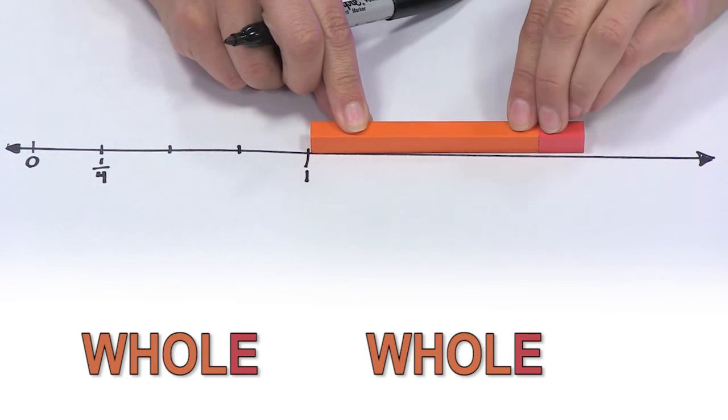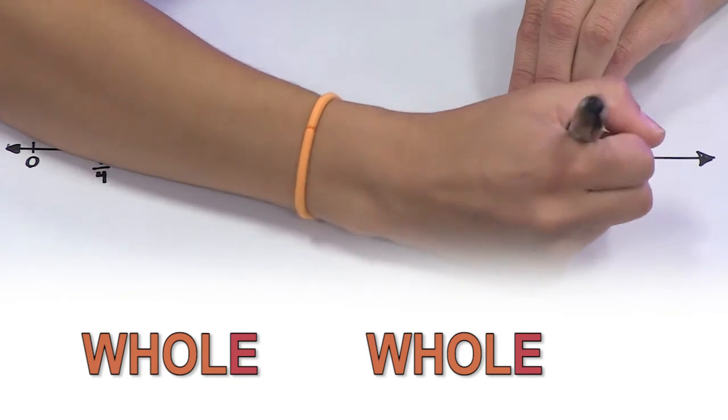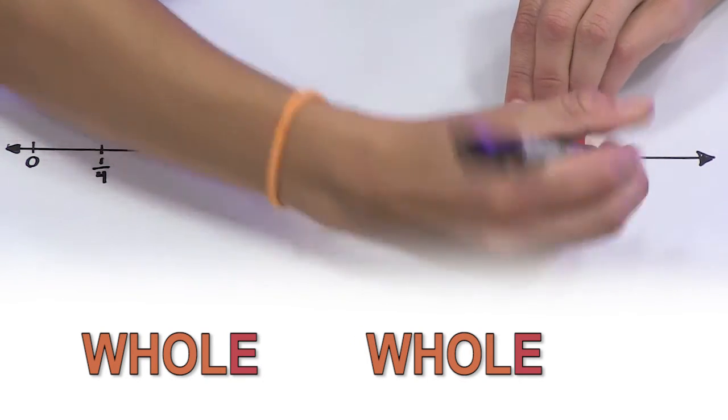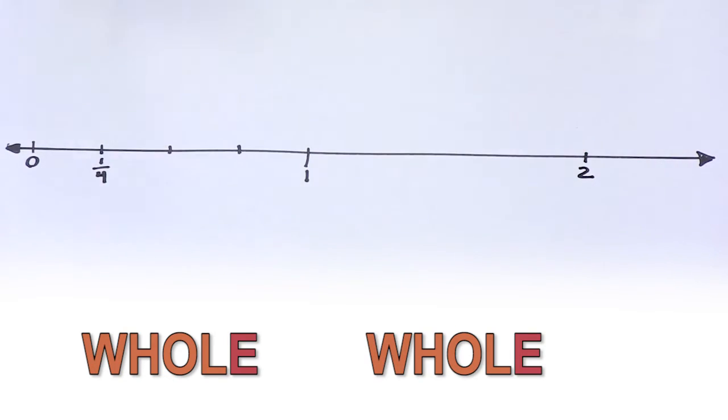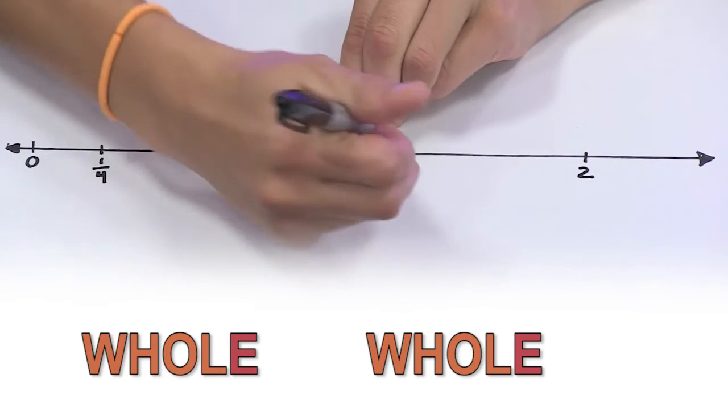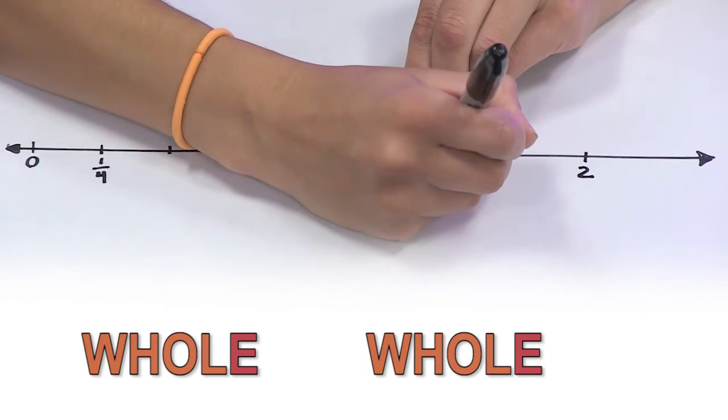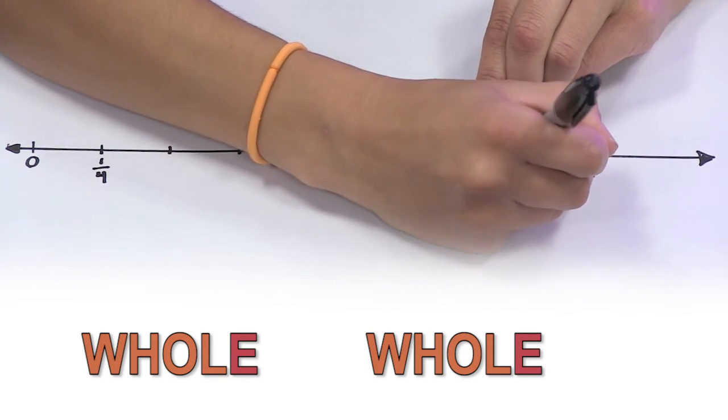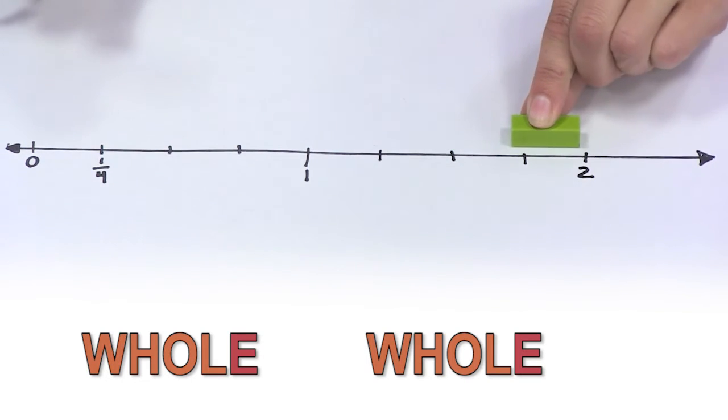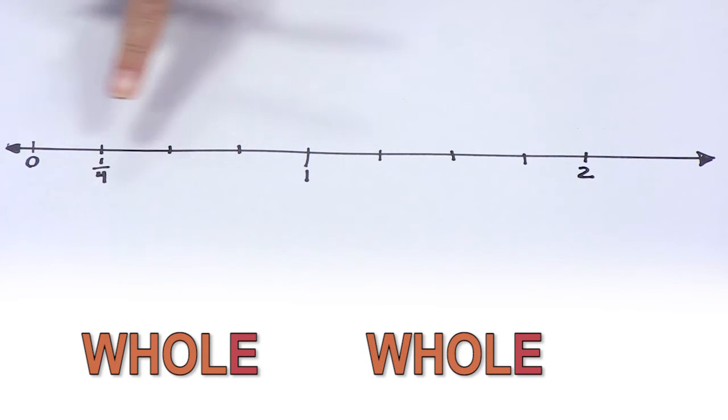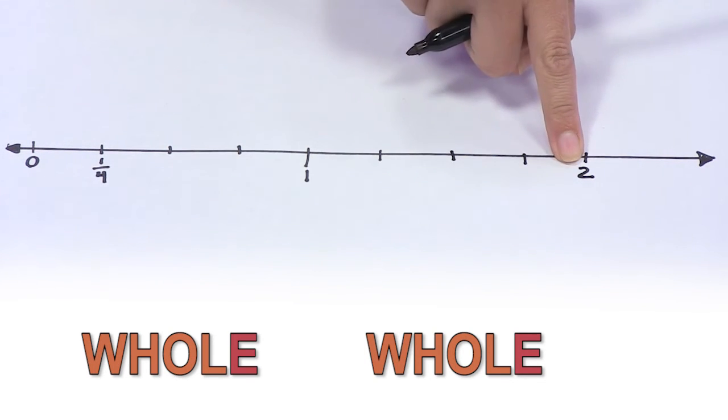I first would need to label my whole on the number line, and using the same green rods, I can label my one-fourth segments, using it over and over, making each section the same length. I have now created two wholes.